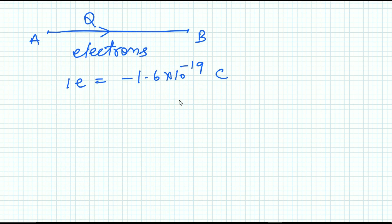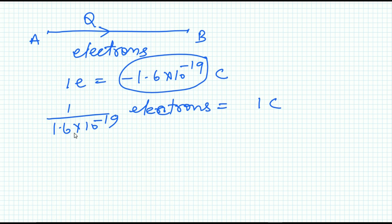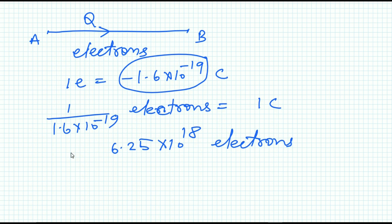We know that one electron is equivalent to minus 1.6 into 10 to the power minus 19 coulombs of charge. That means one coulomb of charge is carried by 1 divided by 1.6 into 10 to the power minus 19 electrons, which equals 6.25 into 10 to the power 18 electrons. So one coulomb of charge is carried by this number of electrons.